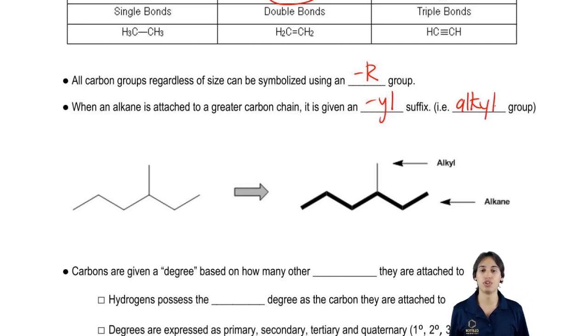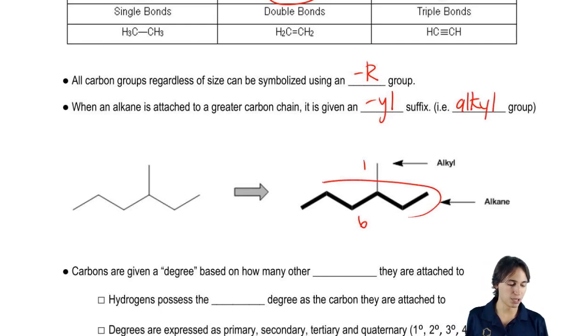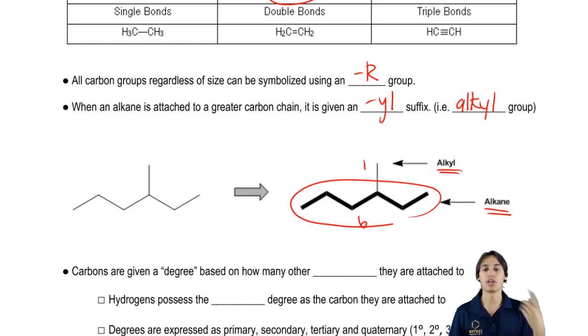Here I've shown you an example where I have a six carbon chain with a one carbon branch coming off of it. The biggest chain is going to be referred to as the alkane, whereas the smaller branch is going to be referred to as the alkyl. So that's something to keep in mind that you put that YL whenever it's a branch.